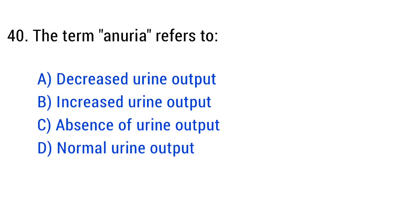Question number 40. The term anuria refers to? The right answer is option C: Absence of urine output.